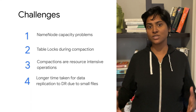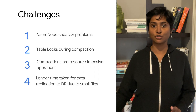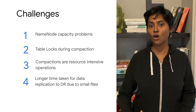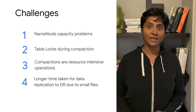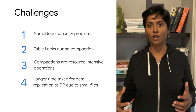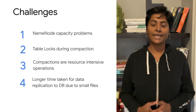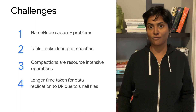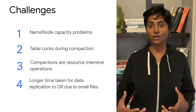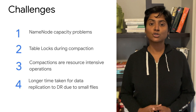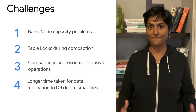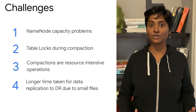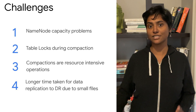Some of the challenges are name node capacity problems due to small delta files. Also, storing a lot of small files cannot be efficiently handled by the Hadoop file system. Reading through small files involves a lot of seek operations. It takes longer for data replication to DR due to these extremely small files. Also, table locks during compaction mean non-ACID sessions cannot access the Hive ACID tables.